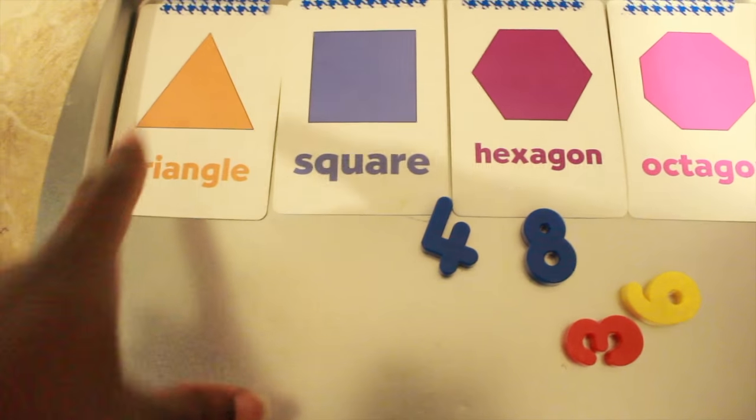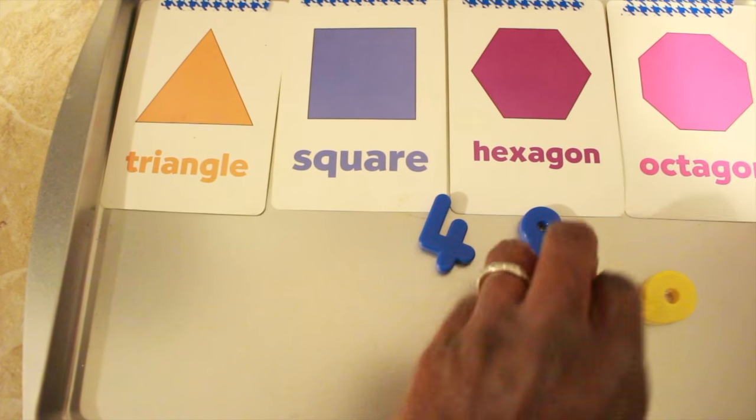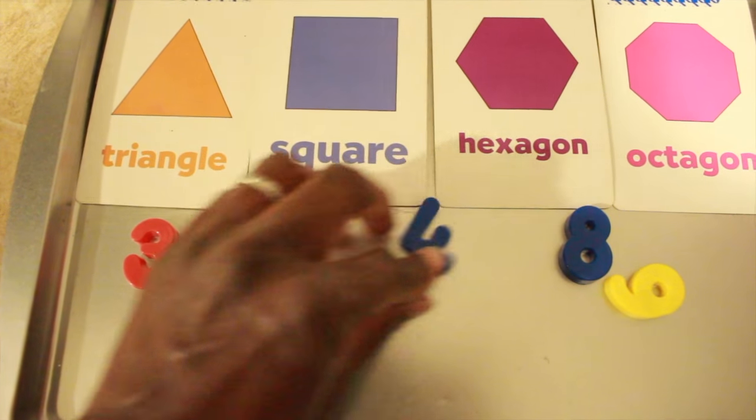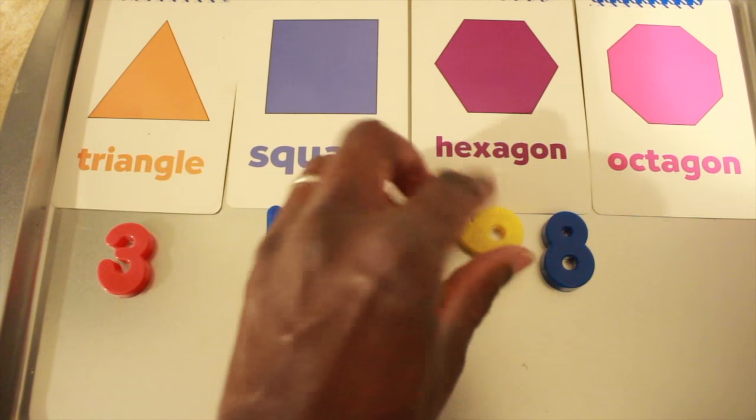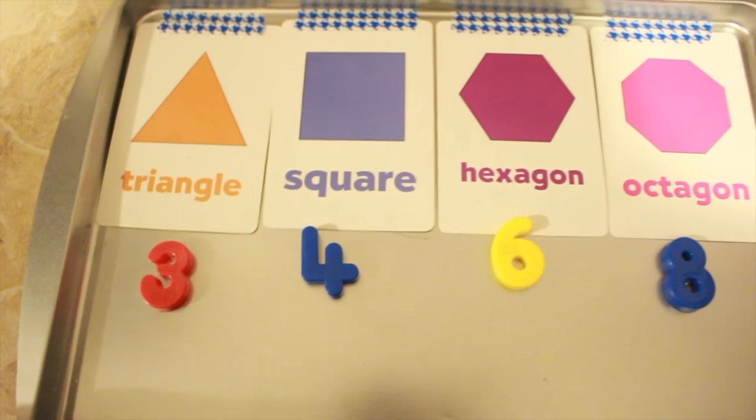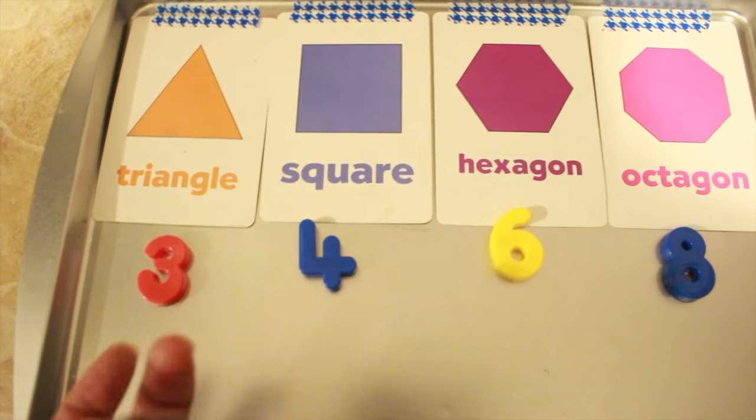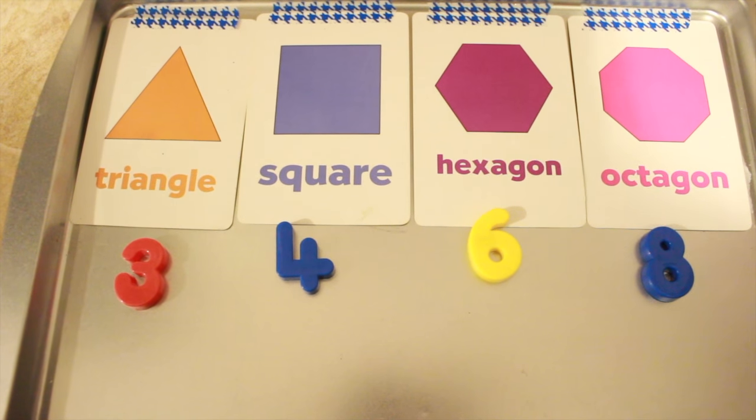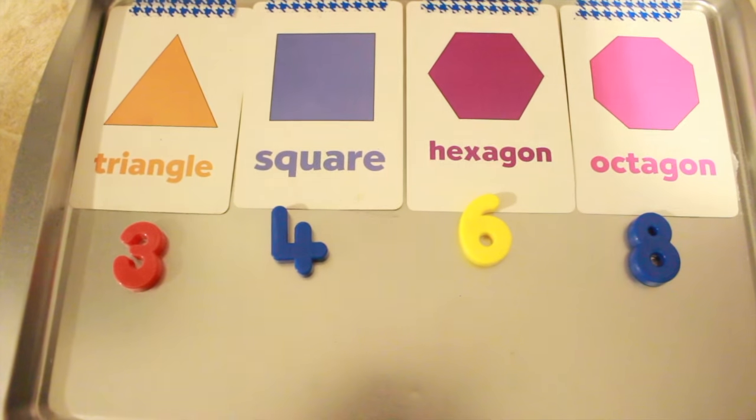So he would go and count. How many sides does the triangle have? One, two, three. Which number is three? And he would match the three. How many sides does the square have? One, two, three, four. Hexagon, one, two, three, four, five, six, so on and so forth to octagon. And he really enjoyed this activity. Even though he caught it within the first couple of days, he just enjoyed doing this and counting the sides over and over again. So this is a great way to introduce polygons and just geometric shapes to your preschooler.